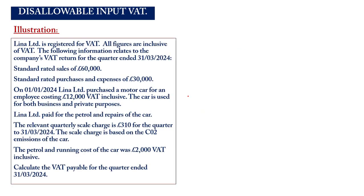Illustration — Linear Limited, VAT registered, with figures inclusive of VAT. For the quarter ended 31st March 2024: standard rated sales of £60,000; standard rated purchases and expenses of £30,000. On 1st January 2024, the company purchased a motor car for an employee costing £12,000 (VAT inclusive), used for both business and private purposes. The petrol and running cost was £2,000 (VAT inclusive), and the relevant quarterly scale charge is £310.